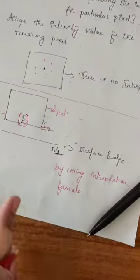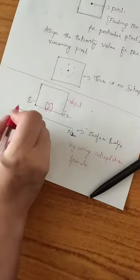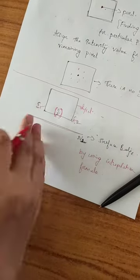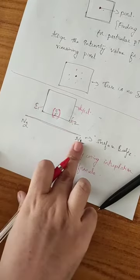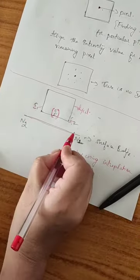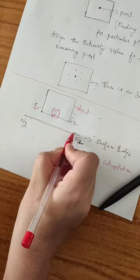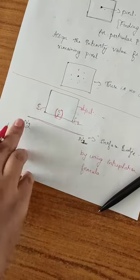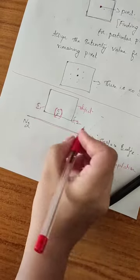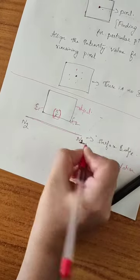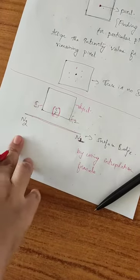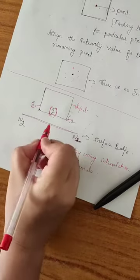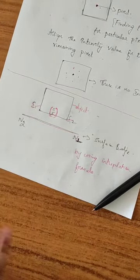For another example, consider this is your surface edge. We take N1 and N2 as normal vectors. By using the interpolation formula we can trace the middle value.